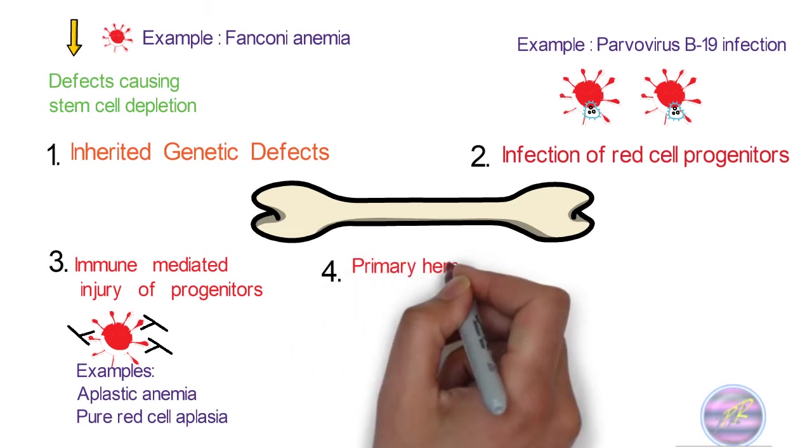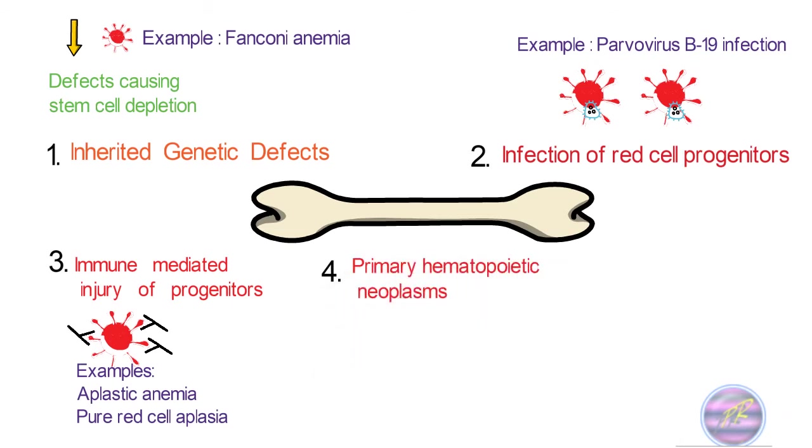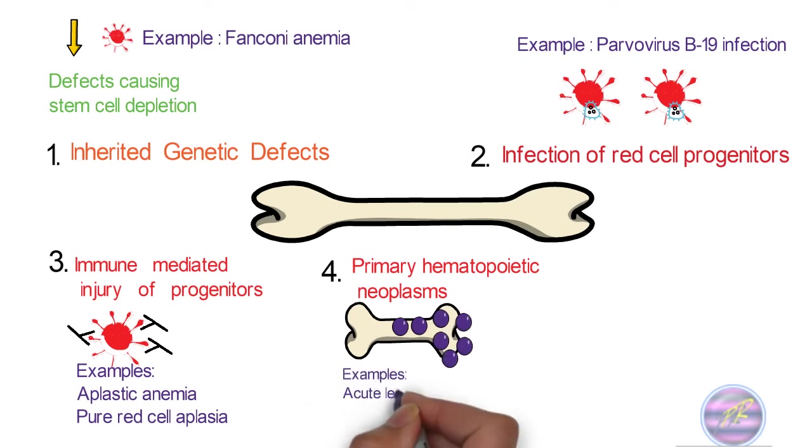The fourth cause is primary hematopoietic neoplasm, i.e., malignancies affecting precursor cells. Examples are acute leukemia, myeloproliferative disorders, etc.